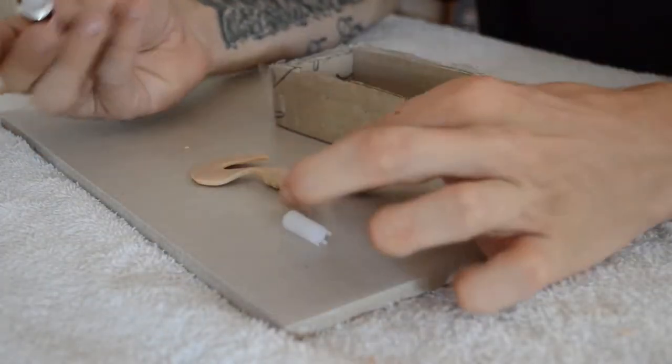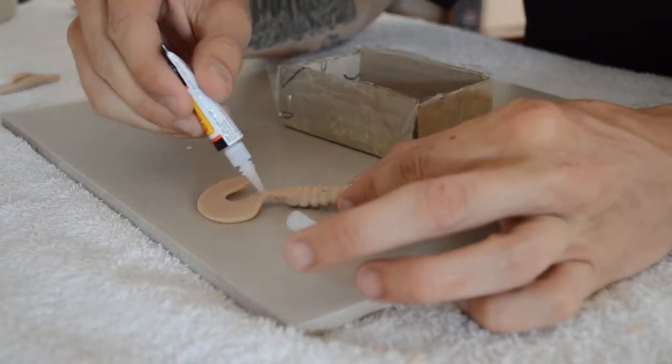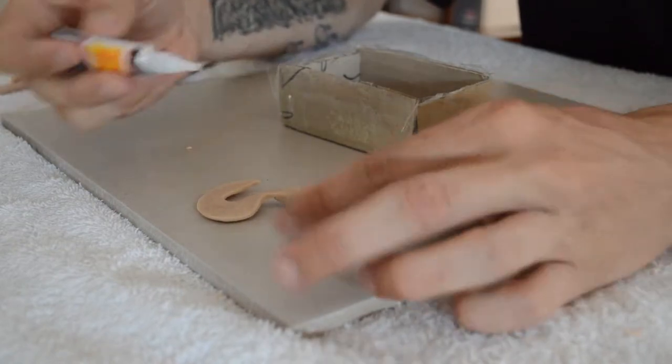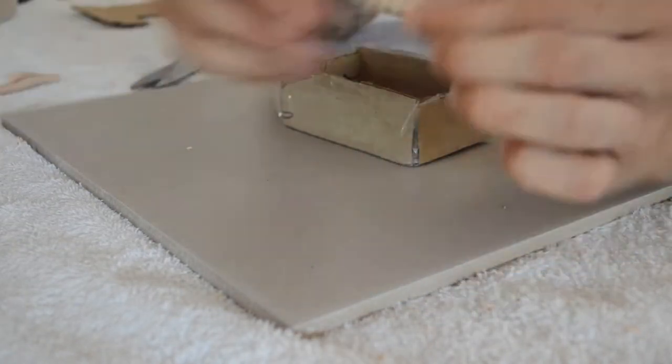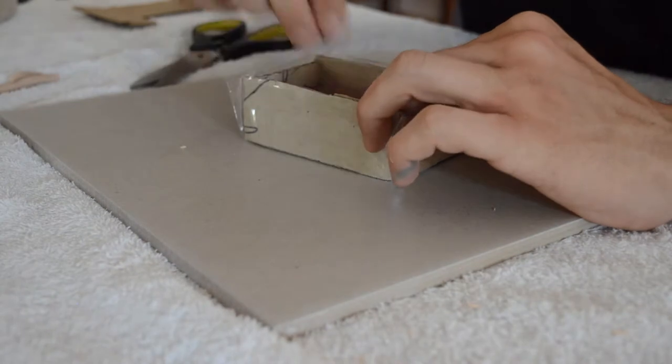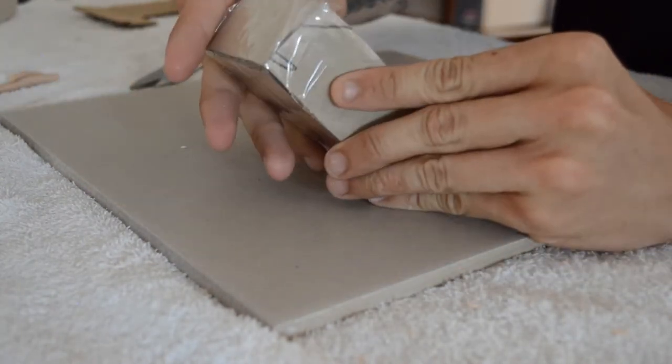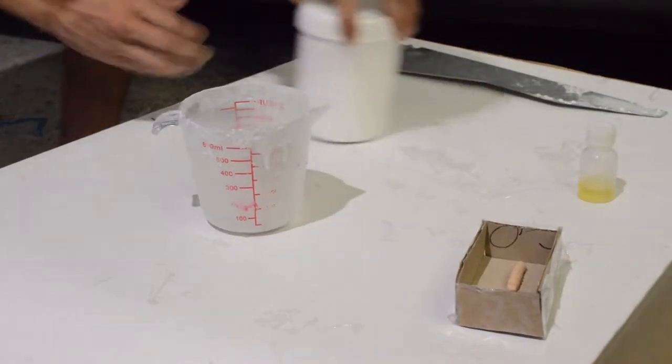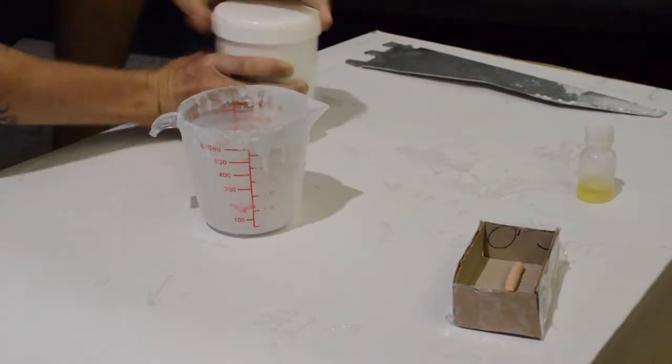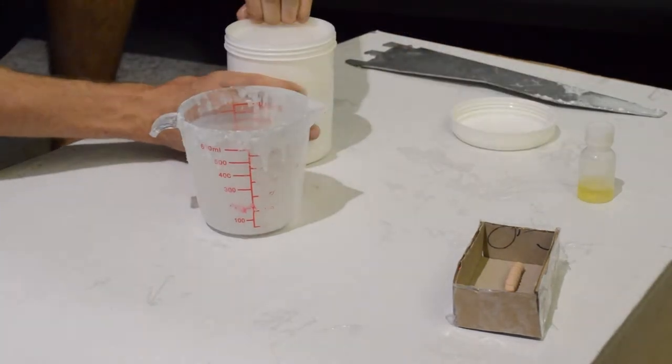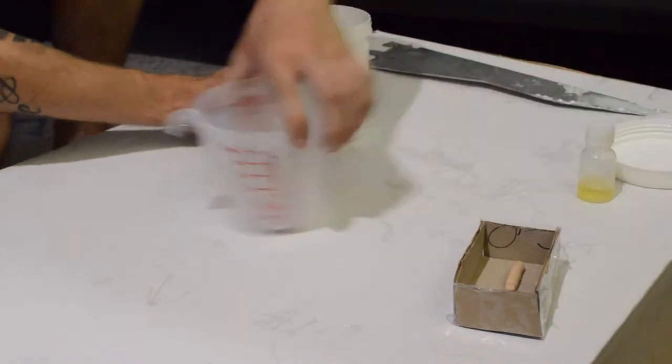Superglue your grub into the box, into the center of the box. You want to mix up about 100ml of the silicone rubber and add your catalyst, remember to mix this thoroughly so that it sets evenly.